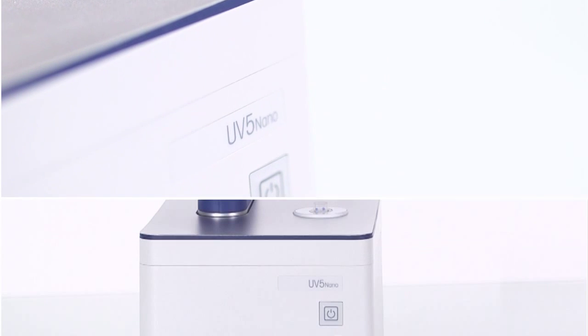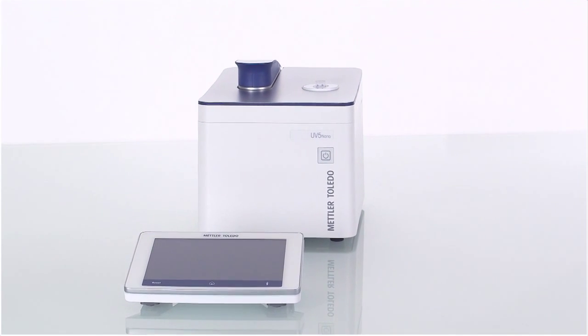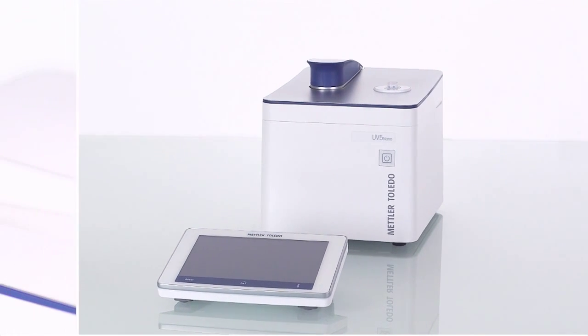Let's have a look at the microvolume measurement platform of the UV-5 Nano. It consists of an optical cell and mirror situated within a movable arm.